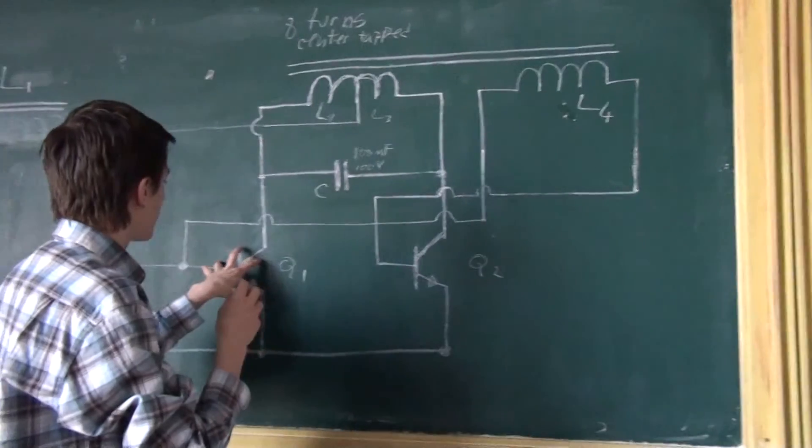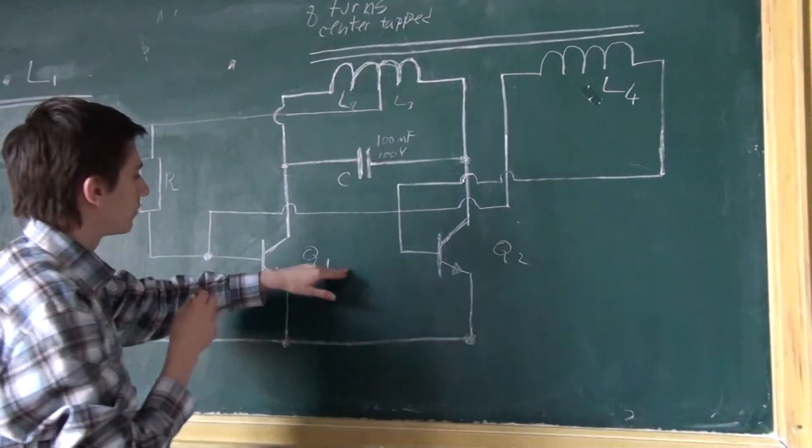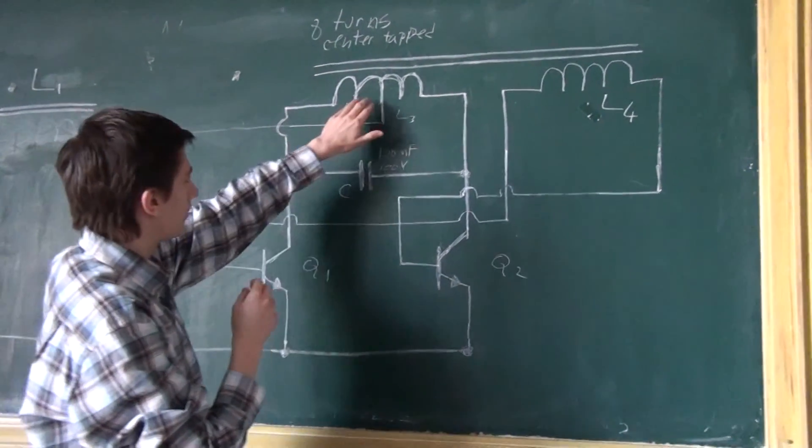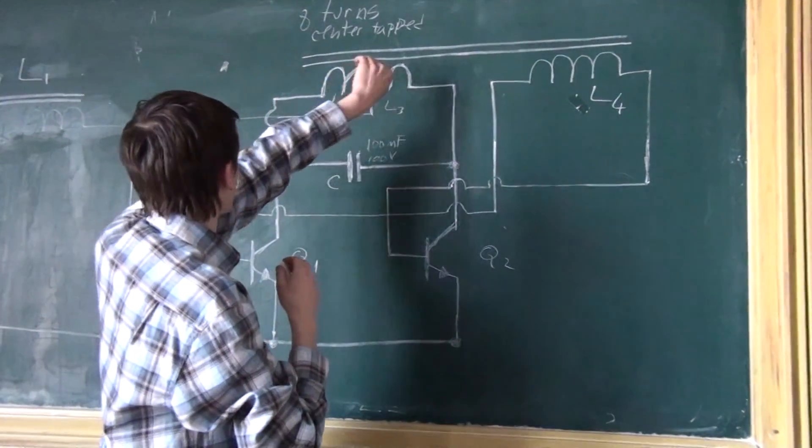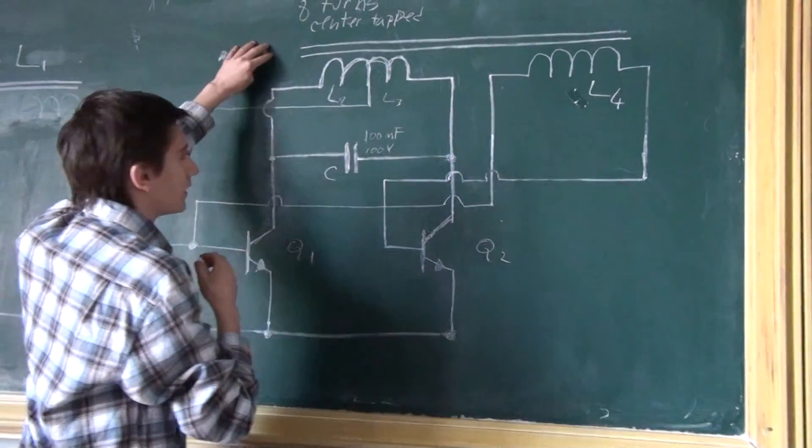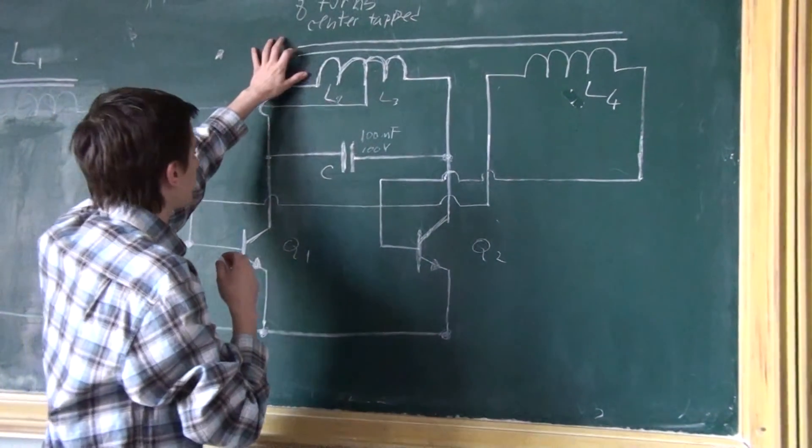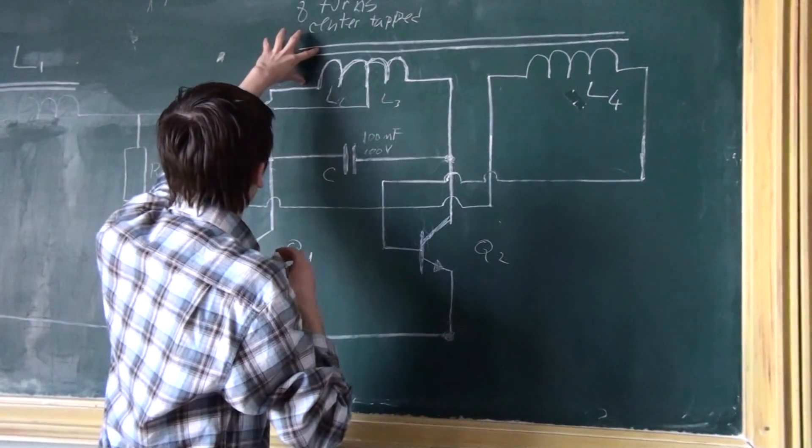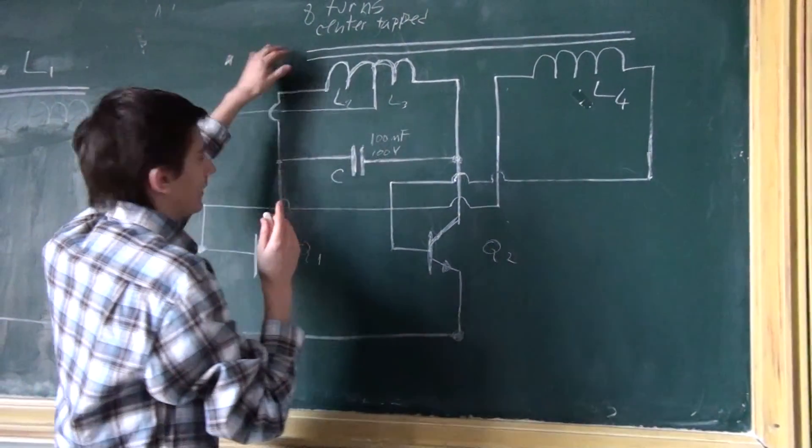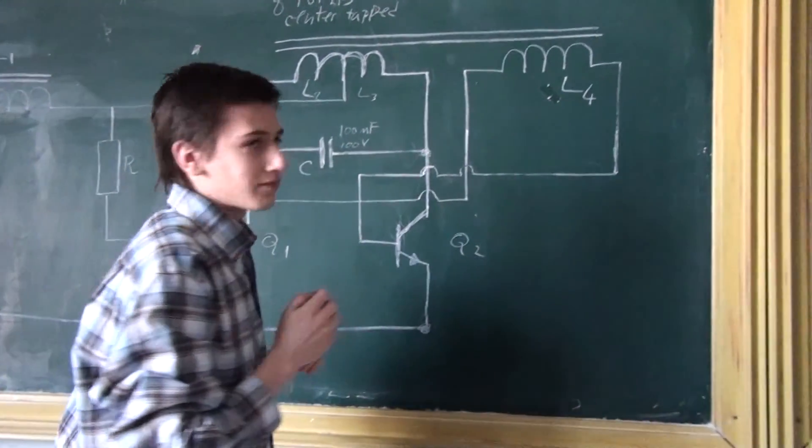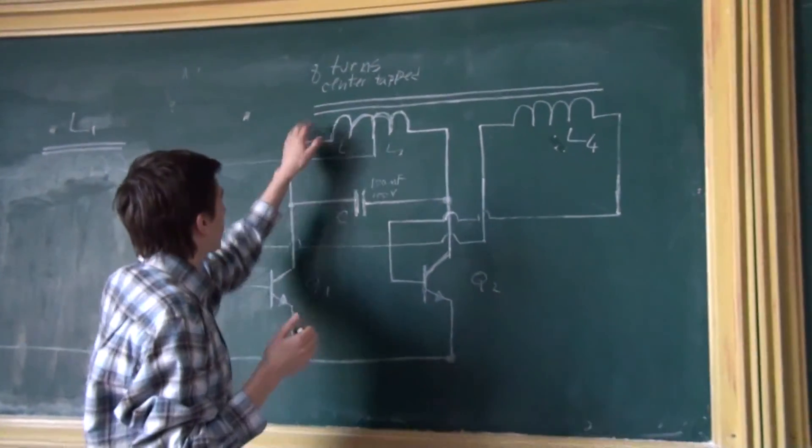When this happens, the current will flow, let's say this one activates first. So the current will flow from here to here, making a magnetic flux through the core, the ferrite core of the flyback transformer.